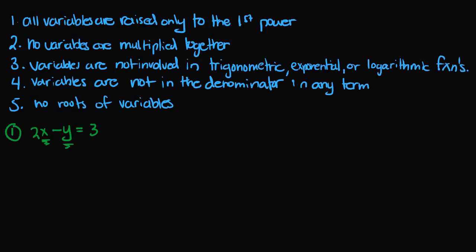None of the variables are multiplied together, so there's nothing like x times y. None of the variables are involved in any trigonometric, exponential, or logarithmic functions, and no variables are in the denominator. So this equation is linear. Now example 2: x plus y squared is equal to negative 1. Here we have y raised to the second power rather than the first, so this is nonlinear.